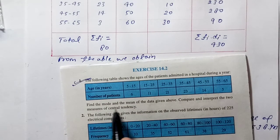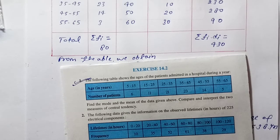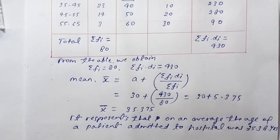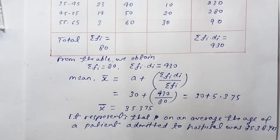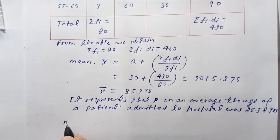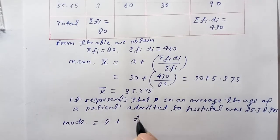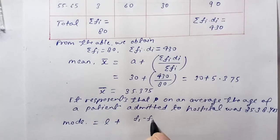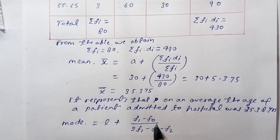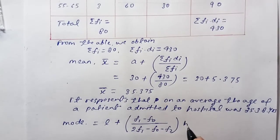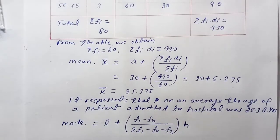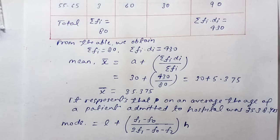Now we'll find the mode. The formula for mode is: L plus (f_1 minus f_0) divided by (2f_1 minus f_0 minus f_2) times h. Let's identify L, f_1, f_0, and f_2 from the given data.